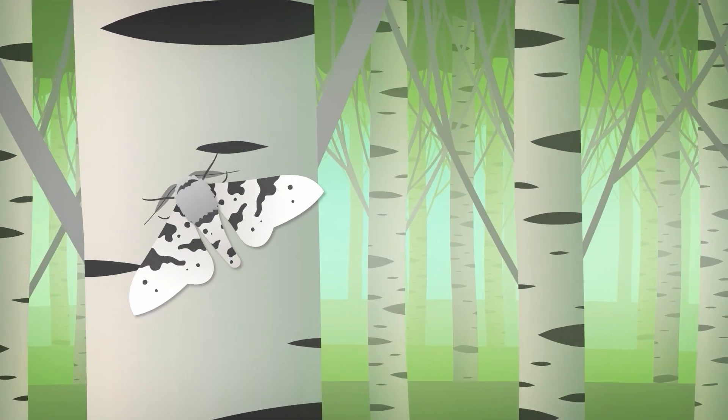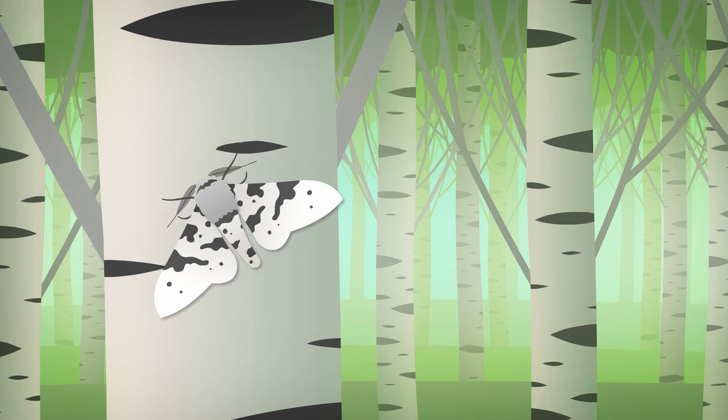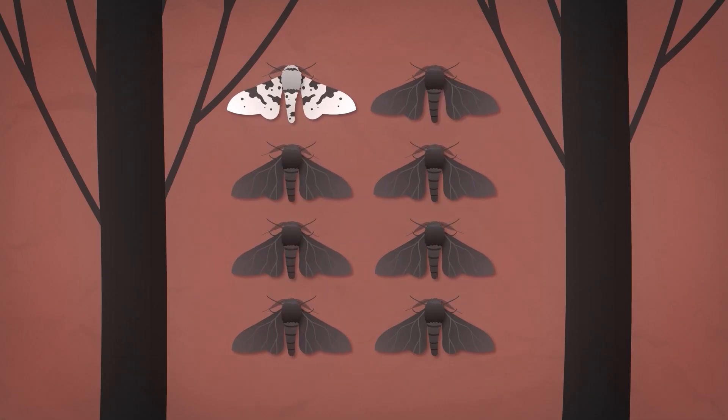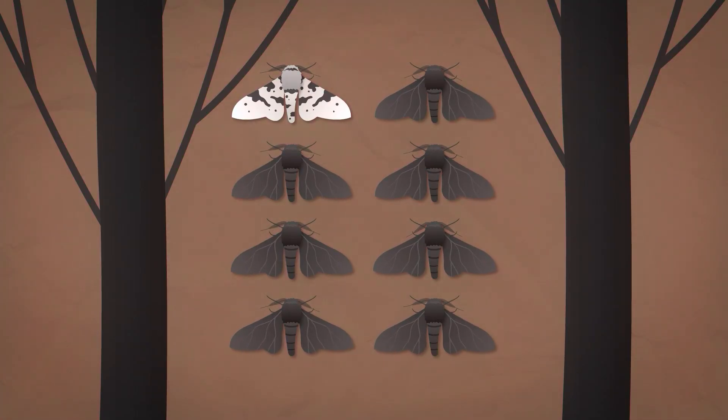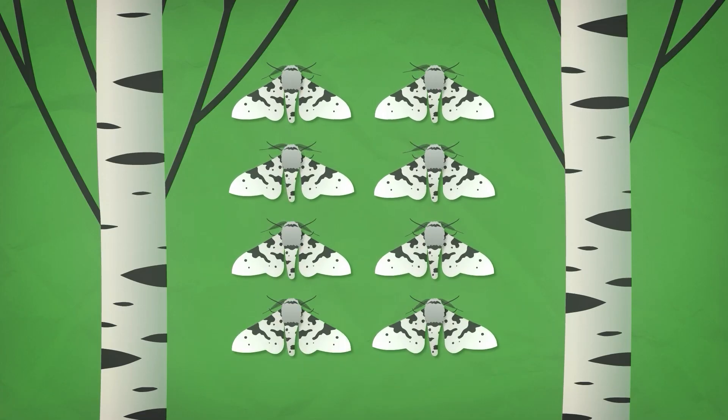A famous example is the peppered moth in England. During the industrial revolution, when trees became black from pollution, the darker moths were more camouflaged, and thus survived and produced more offspring. This is why the species gradually changed its color from white to black. When the air quality in England improved, the trees turned white again, and with them, the moths.